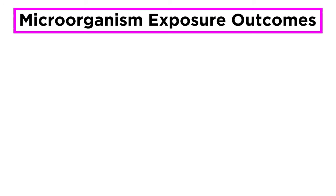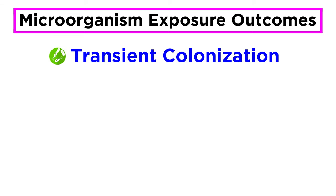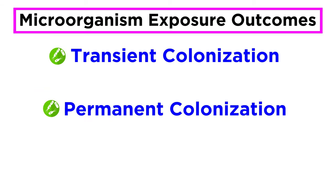Now let's get a bit more specific. When you're exposed to a microorganism, there are three possible outcomes. The first of these is called transient colonization. The second is called permanent colonization. And the third outcome is disease.